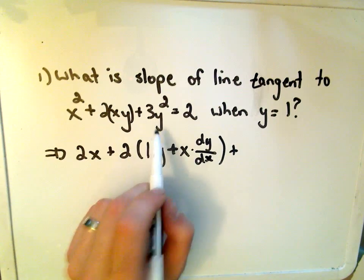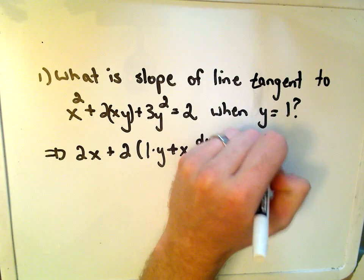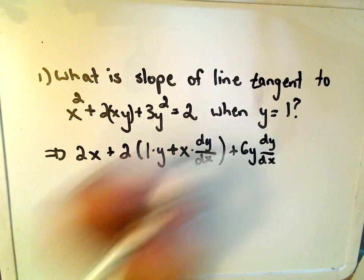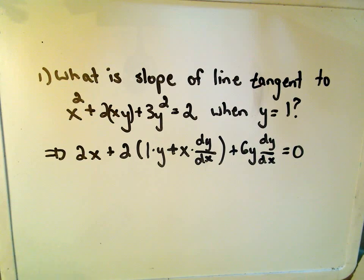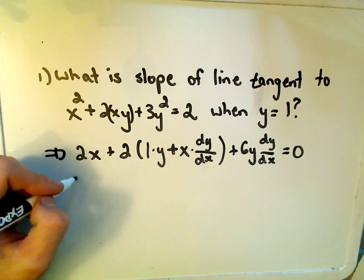The derivative of the 3y squared will get 6y, we have to tack on our dy/dx. And then if we take the derivative of the right side, we'll simply get zero. So what we're going to do at this point is just solve for dy/dx.